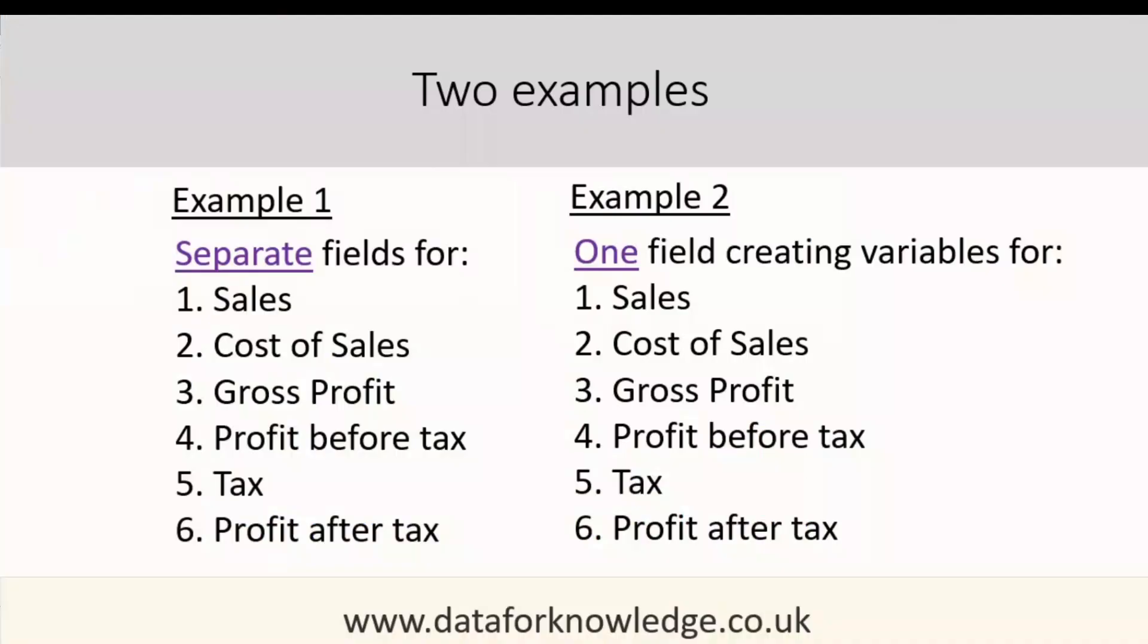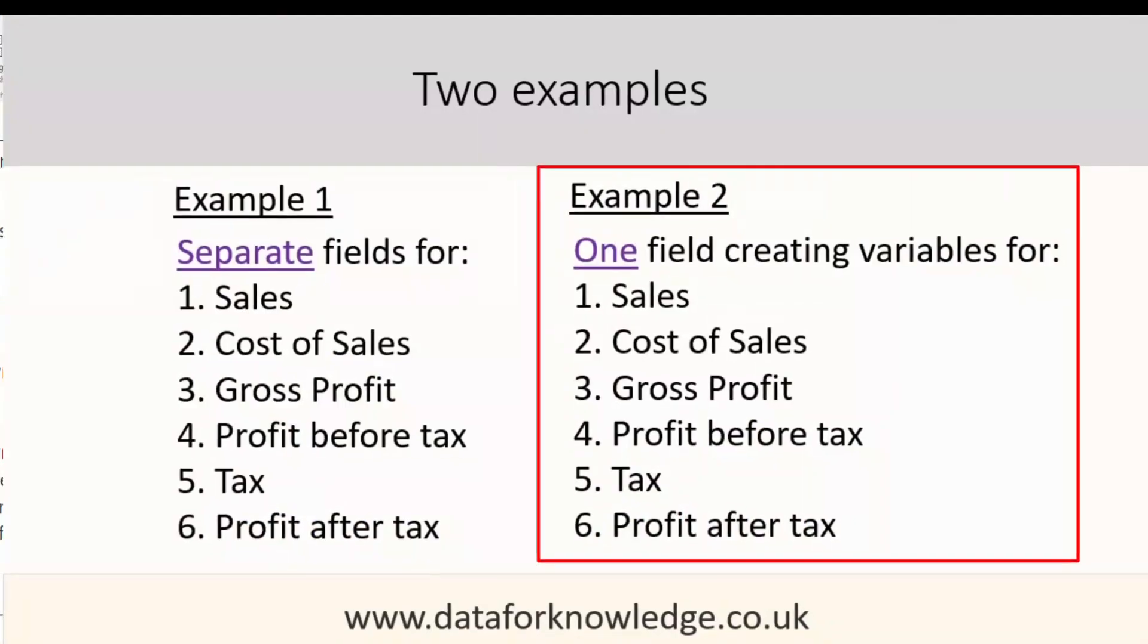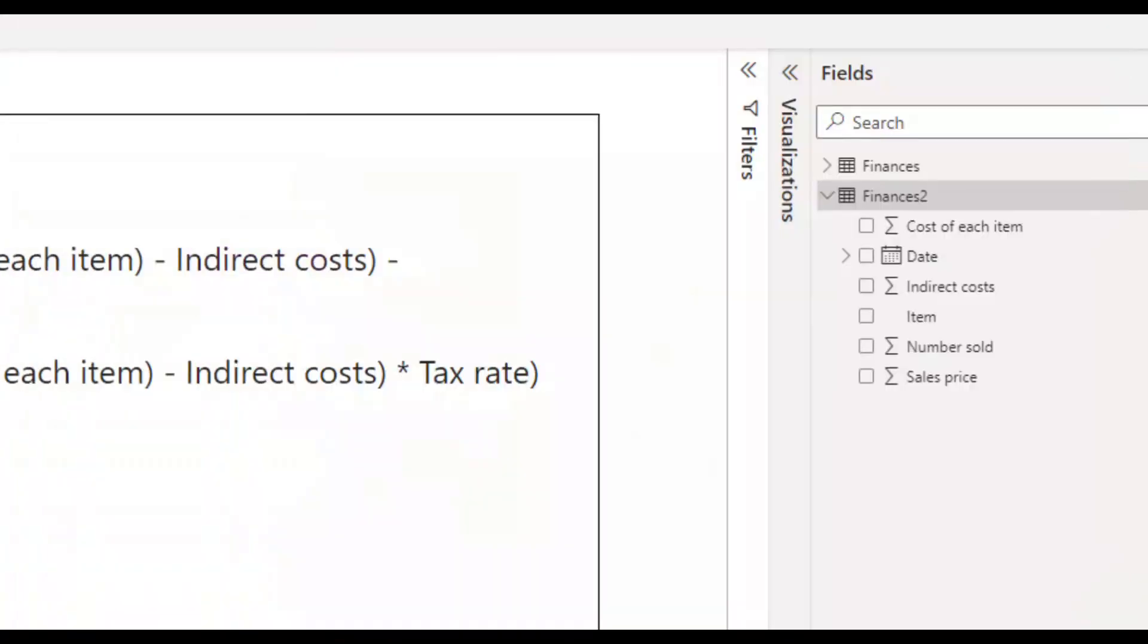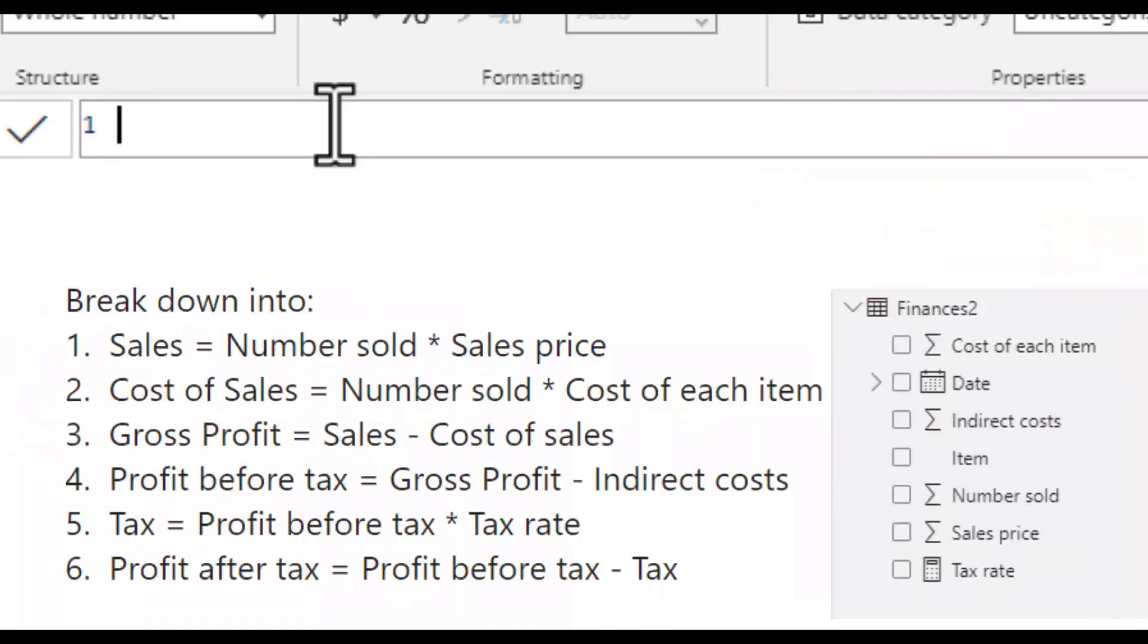The second example uses variables to store each step. Purely for the purposes of this demonstration, I have set up a table called finance two, which contains only the original data set columns. This time, I will only set up one calculated column. To begin with, I give my column a name. Profit after tax and say it equals. Then to make the code easier to read, I will set up each variable on a new row. To do this, on a Windows computer, I press shift and return.